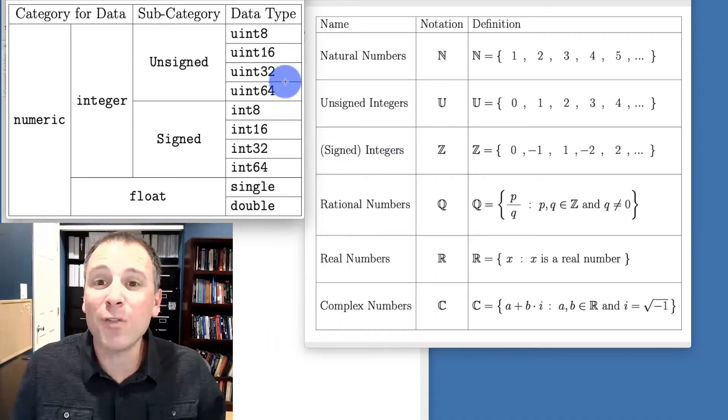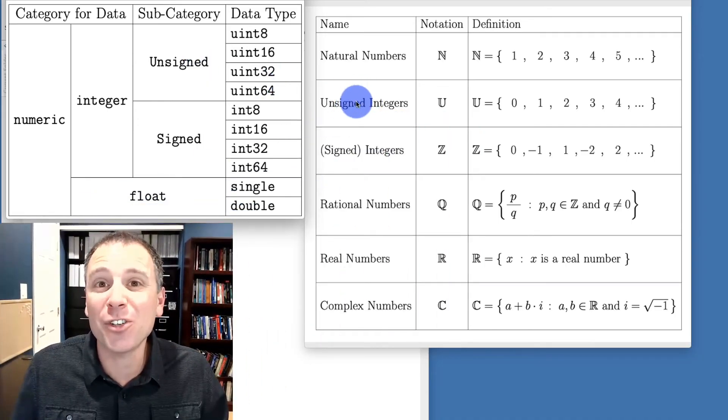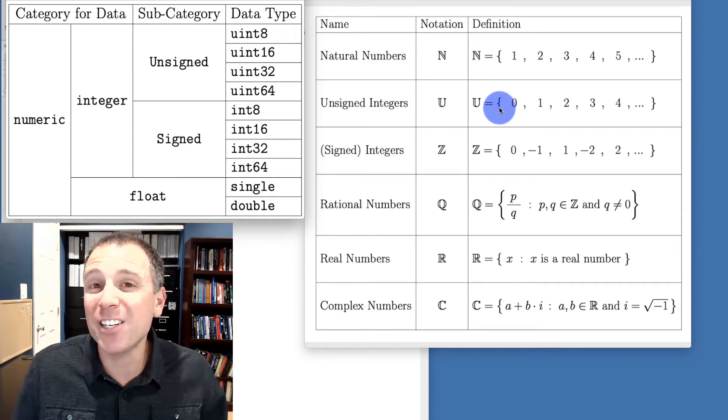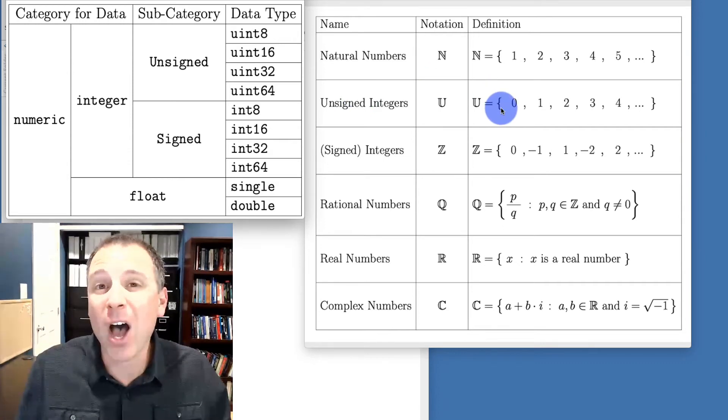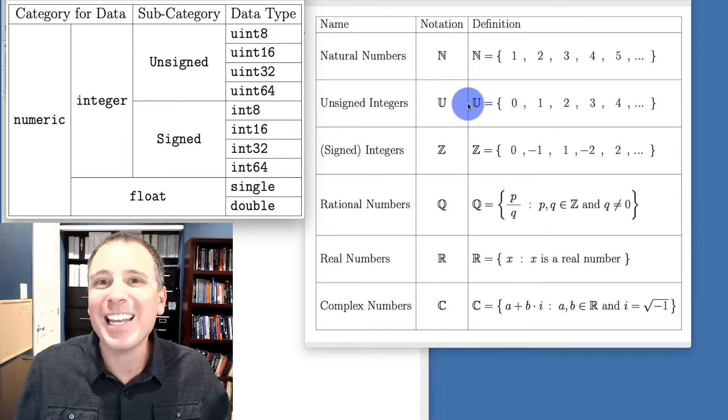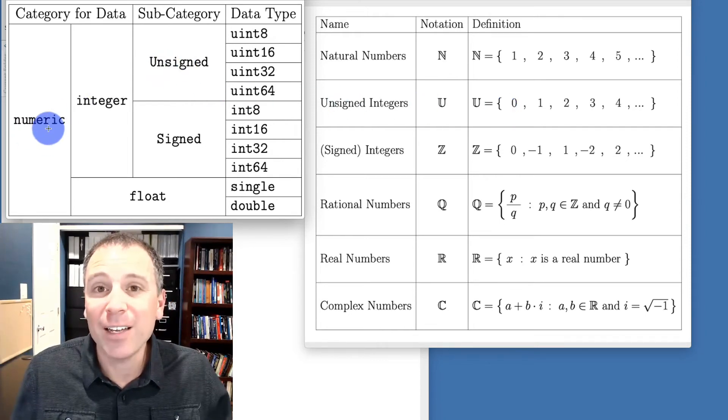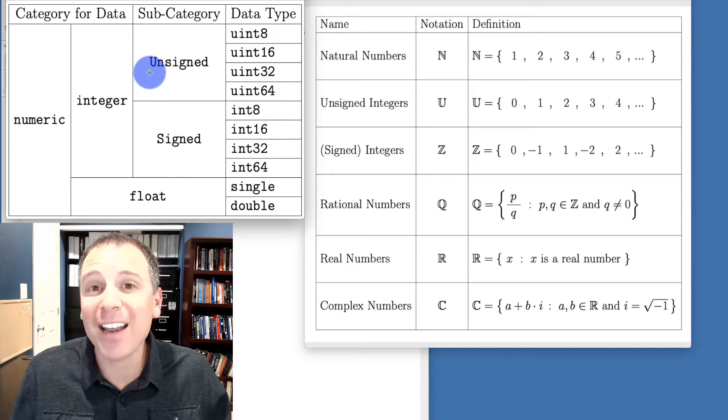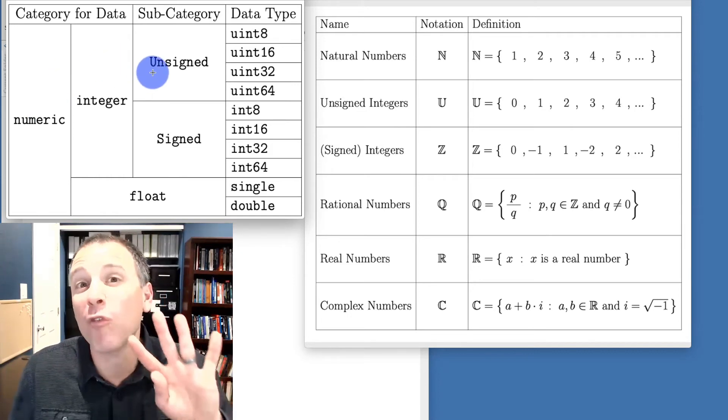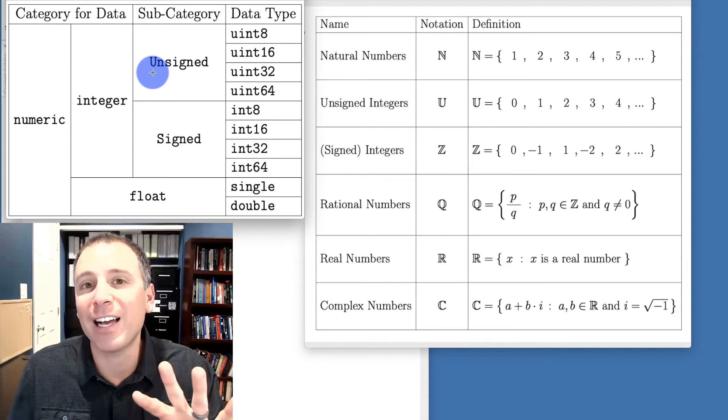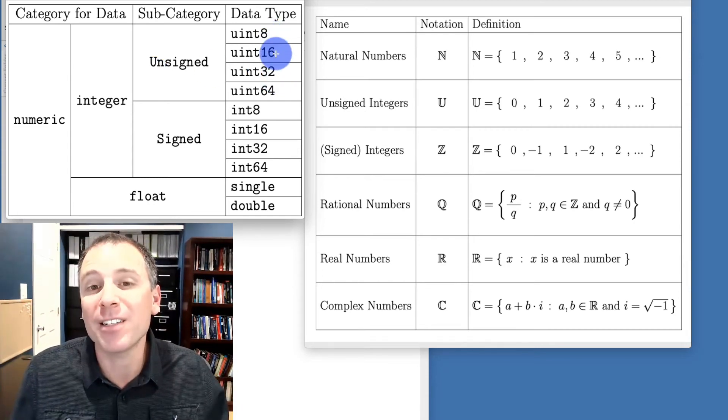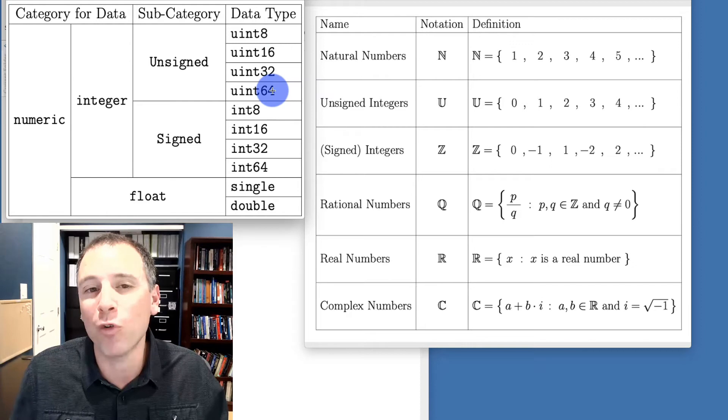So from that perspective, when we're thinking about unsigned integers, in mathematics, unsigned integers are this large set of possible non-negative counting numbers. But in MATLAB, unsigned integers represent numeric data stored in a special data class. And specifically, there are four unsigned integer data classes of varying sizes: 8 bits, 16 bits, 32 bits, and 64 bits.